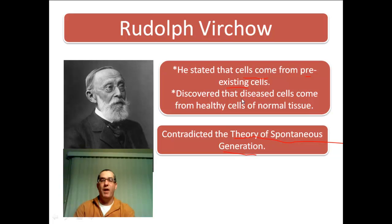What Virchow found is that disease cells came from healthy cells — from normal tissue. Even though they were diseased and something was wrong with them, they still came from a pre-existing cell.